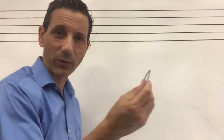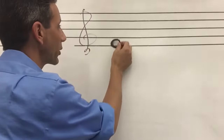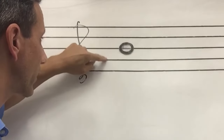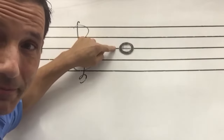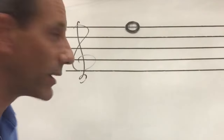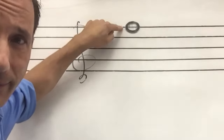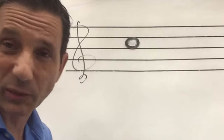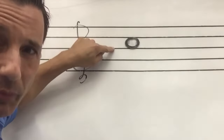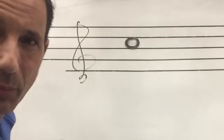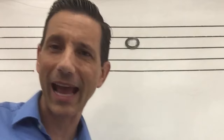On treble clef, if you have a note on the third line, just remember 'Every Good Boy' — that note is a B. It's always a B on treble clef. Put it up on the top line, that's an F: 'Every Good Boy Does Fine.' Now if it's a space note between lines — 'Every Good Boy,' what's above B? A, B, C — that note is a C. You can get the notes between the lines quickly just from remembering that one catchphrase.